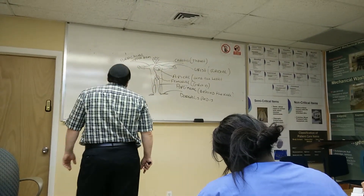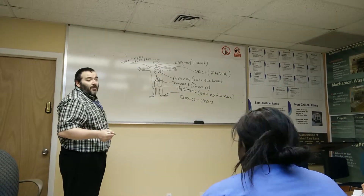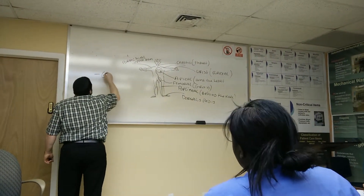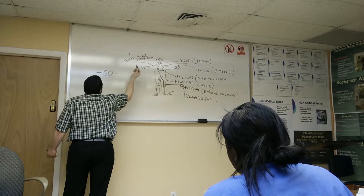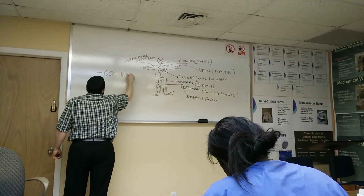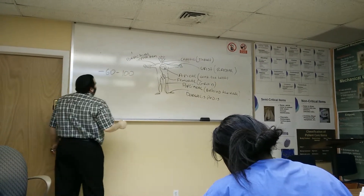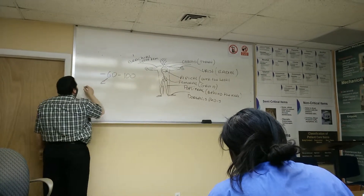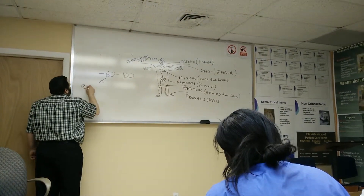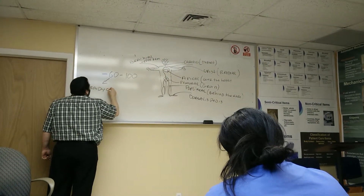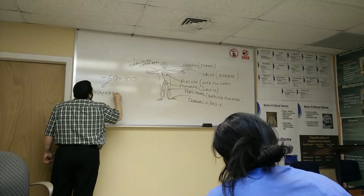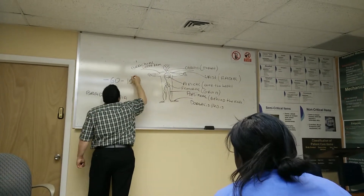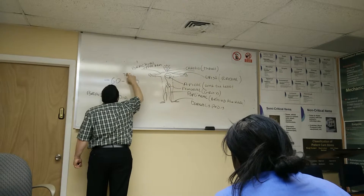Since we're primarily dealing with adults, the regular pulse rate for an adult is anywhere from 60 to 100 beats per minute. Anything below 60 is called bradycardia. Anything above 100 is called tachycardia. Brady means slow, and tachy means fast — these are two very important prefixes.